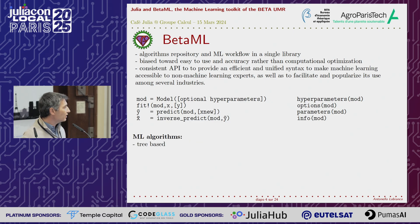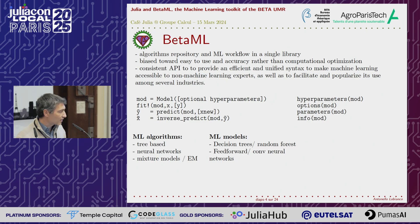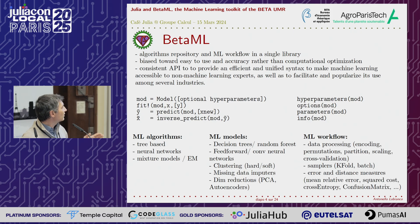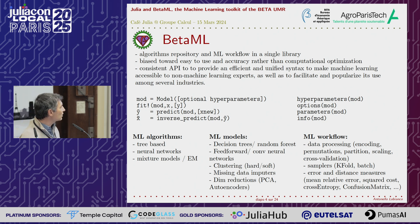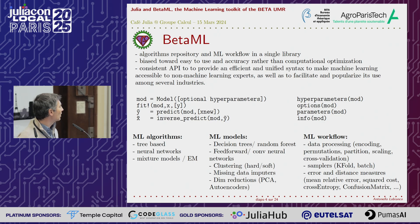We currently have three base algorithms: decision tree, random forest, and neural network. We also have mixture models using expectation-maximization, with clustering, missing data imputation, and data reduction. On the side of these algorithms, we have tools to work with them — partitioning, scaling, encoding, everything in a typical machine learning workflow, plus measures to understand the quality of your model.